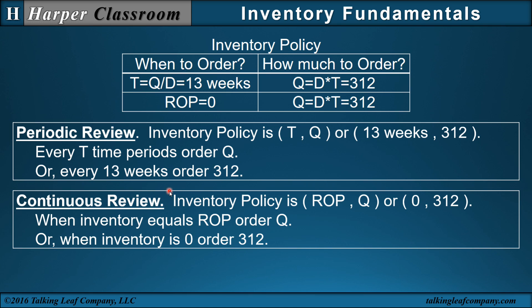In the continuous review system, the inventory policy is ROPQ. The ROP is zero, which is given, and the lot size is 312. So when the inventory equals ROP, order Q — or when the inventory is zero, order 312.